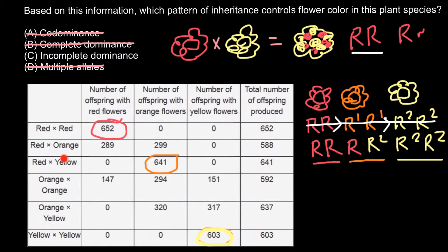This means we have only two alleles, and this is also not complete dominance — because when we cross yellow and red, we do not get 100% red (as would happen if red were dominant) nor 100% yellow (as would happen if yellow were dominant). Instead we get a completely different color — orange. This gives us the idea that the correct answer is incomplete dominance.